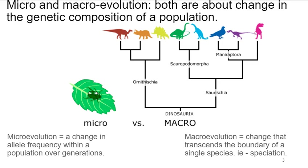To ground this idea in the area of evolution, earlier in class you learned about evolution and how it is genetic change over time, and that there can be both micro and macro evolution. Micro and macro evolution are both about change in the genetic composition of a population.